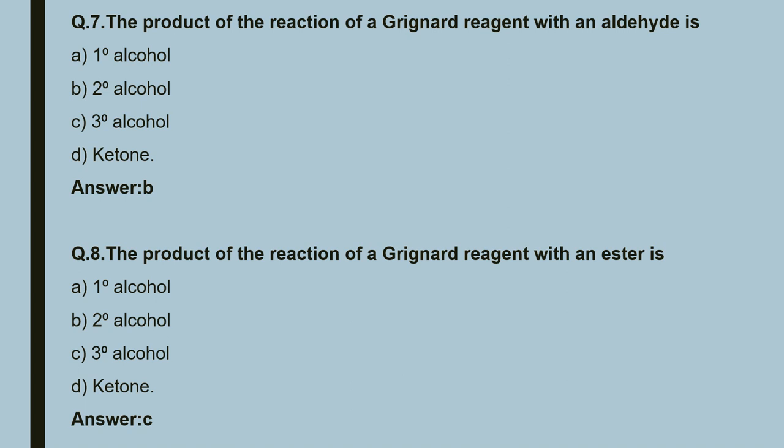Question number 7: the product of the reaction of Grignard reagents with an aldehyde is — 1° alcohol, 2° alcohol, 3° alcohol, or ketone. The correct answer is B, that is 2° (secondary) alcohol.